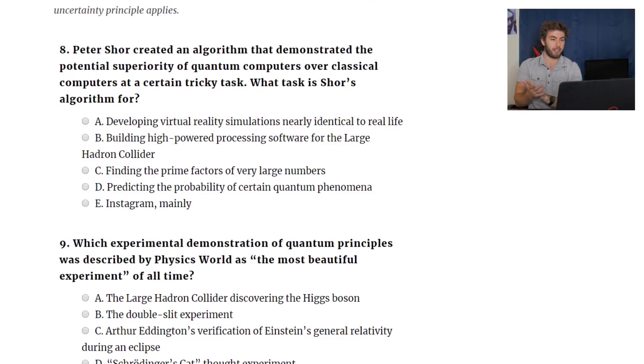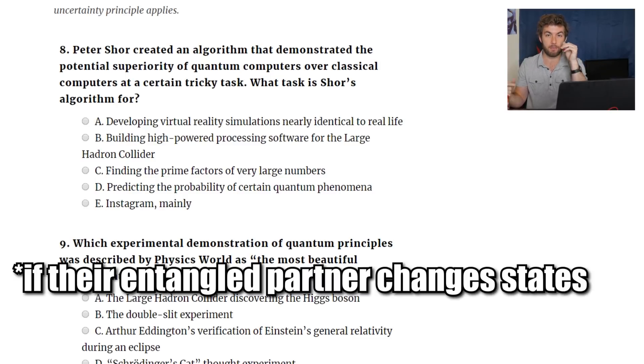Peter Shor created an algorithm that demonstrated the potential superiority of quantum computers over classical computers at a certain tricky task. What task is Shor's algorithm for? Developing virtual reality simulations nearly identical to real life. That'd be pretty cool. Building high-powered processing software for the Large Hadron Collider. Finding the prime factors of very large numbers. Predicting the probability of certain quantum phenomena, or Instagram mainly. Okay. Well, Instagram. Insta means instantaneously. Quantum entanglement means the particles will change states without any time passing, so Instagram is clearly the correct one.